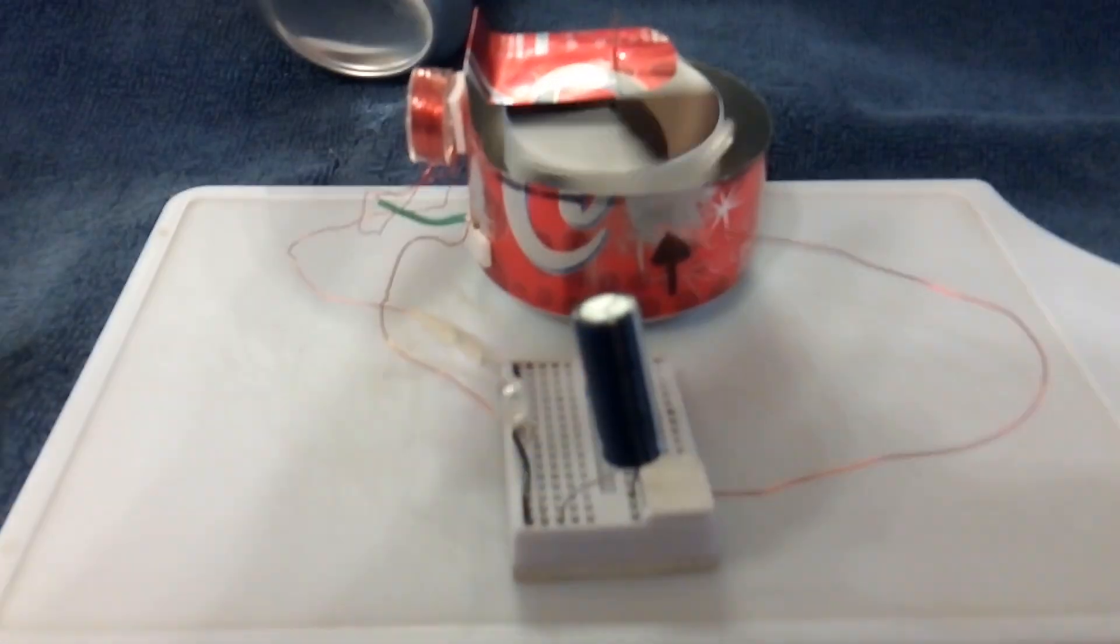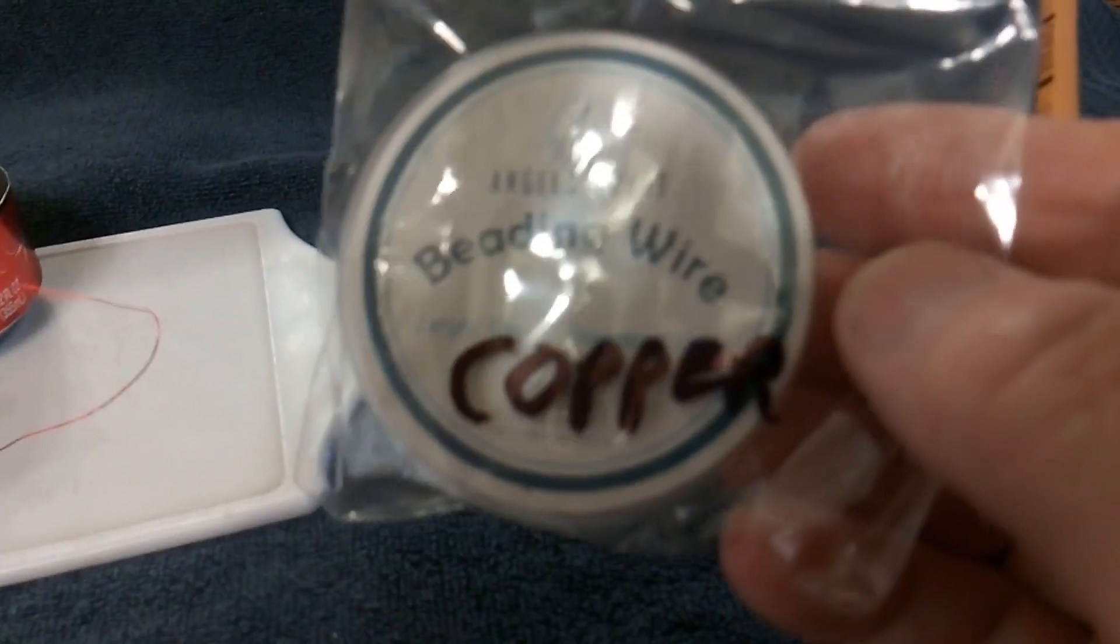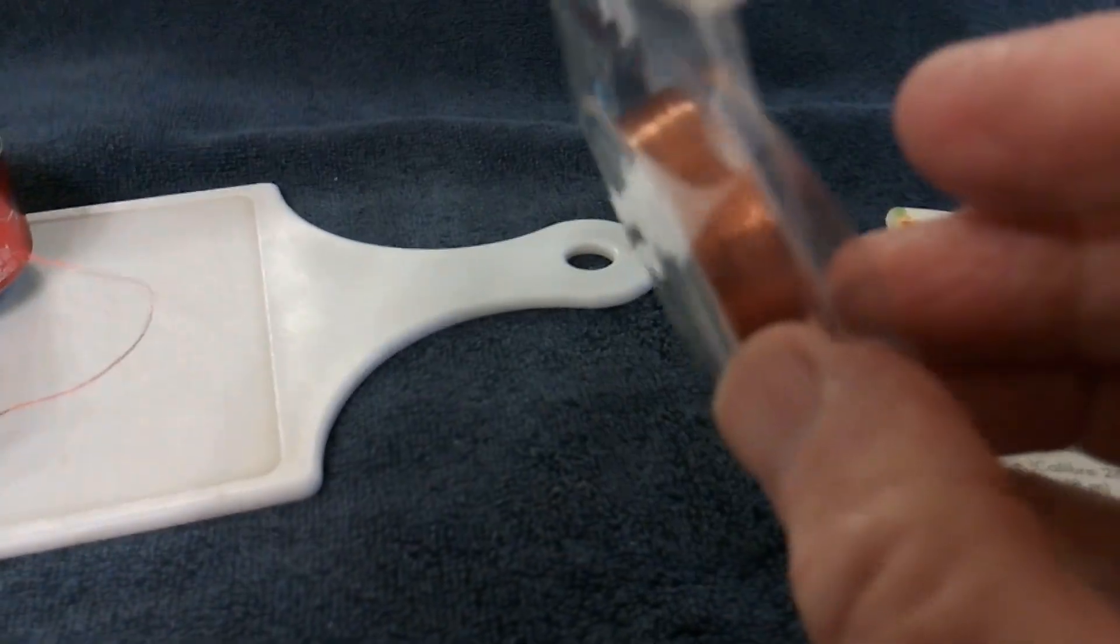The coil wire - you can use this copper beading wire you get at the craft store, 30 gauge. And that's the magnet and that's your pulse motor.